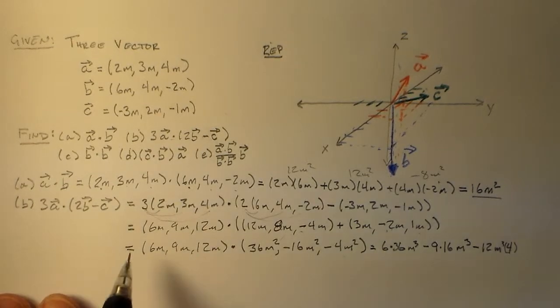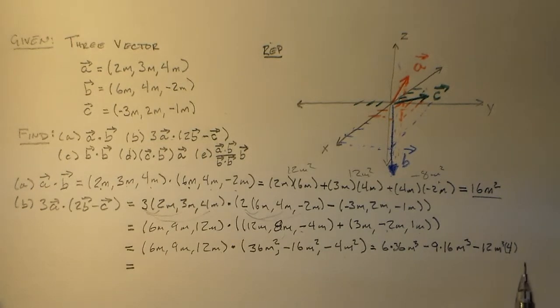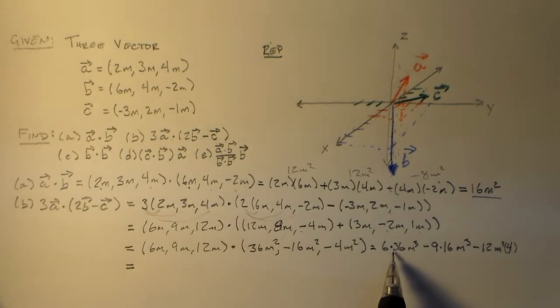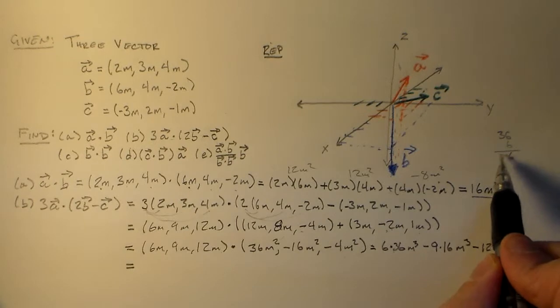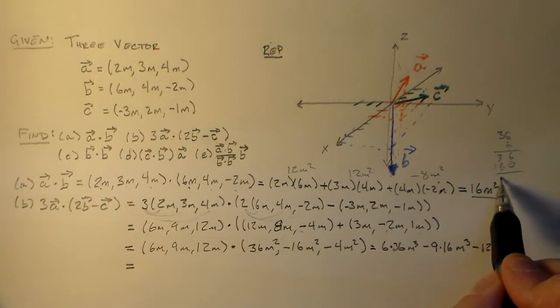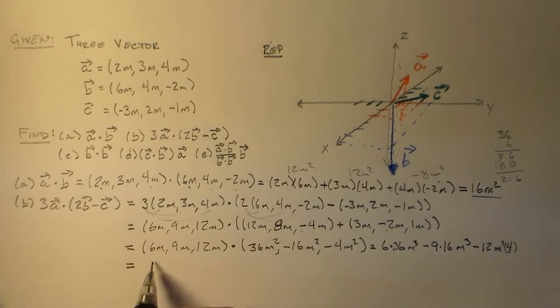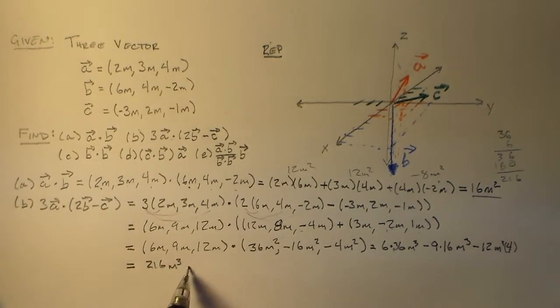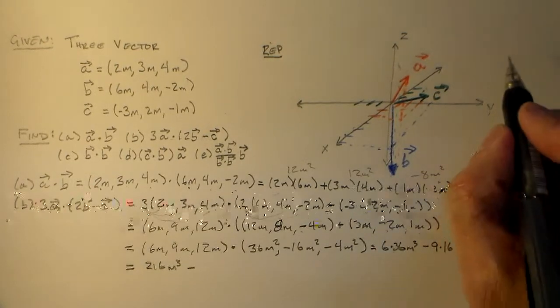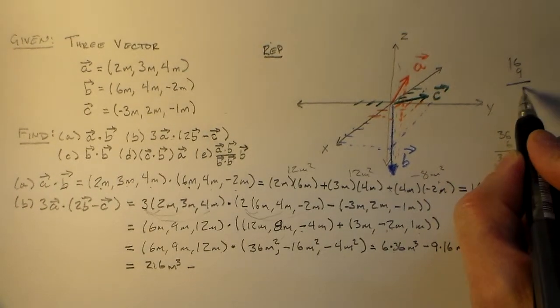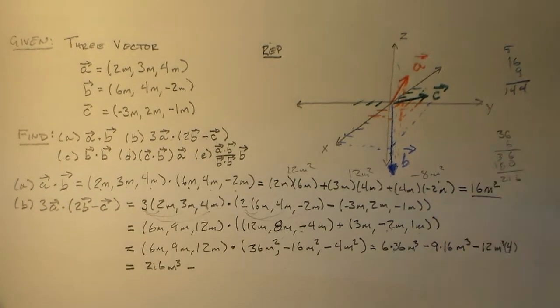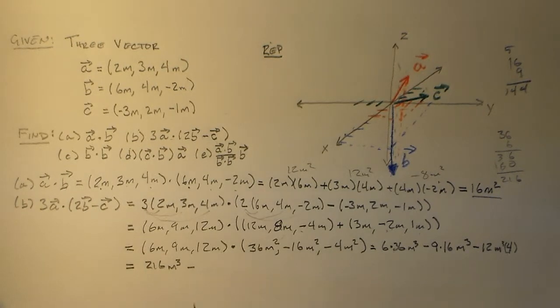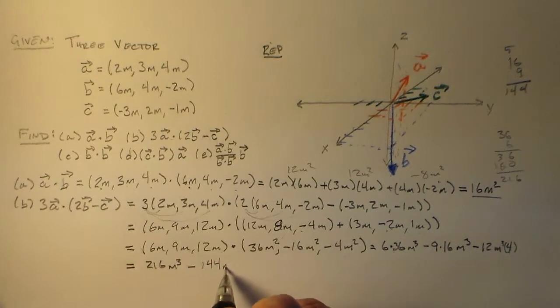So we keep on going. And of course I have an error in my previous calculation, so you'll have to bear with me as I multiply 15 by 6. Wait, let me recalculate. Looking at the vectors: c is (-3m, 2m, -1m), b is (6m, 4m, -2m). So we have 12 times 3 is 36 meters squared, 8 minus 2 is 6, wait, let me redo this. 12 plus 3 is 15, 8 minus 2 is 6, minus 4 plus 1 is minus 3. Actually, 12 meters times 3 is 36, 9 times 16, let me recalculate: 9 by 16 is 144 minus 144 meters cubed, minus 48 meters cubed.